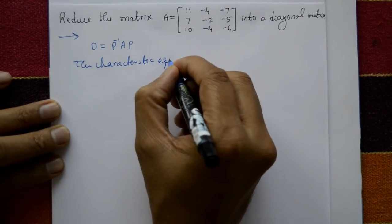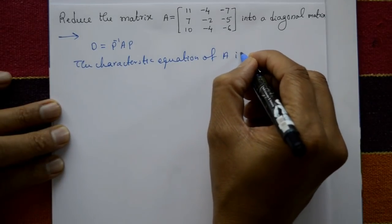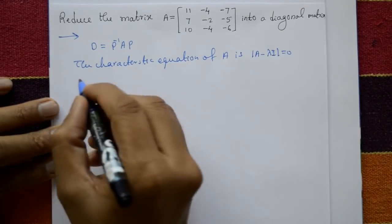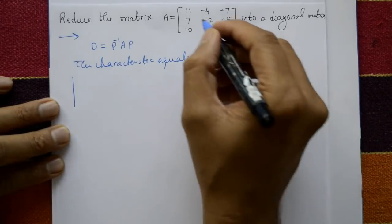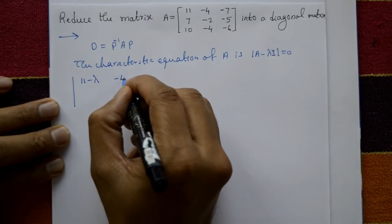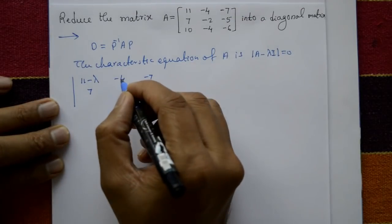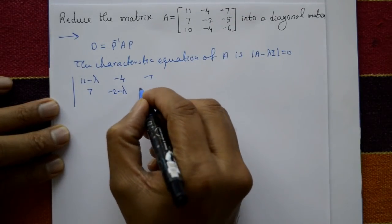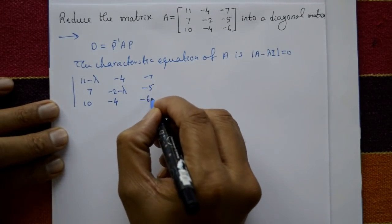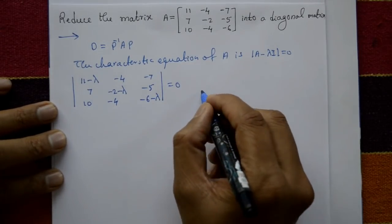The characteristic equation of A is determinant of (A minus lambda I) equal to zero. Setting up the determinant: [11-λ, -4, -7; 7, -2-λ, -5; 10, -4, -6-λ] equal to zero. Now expand this.